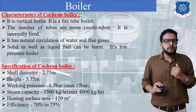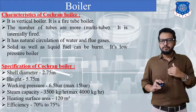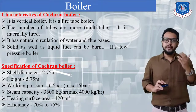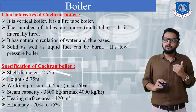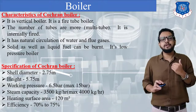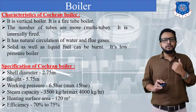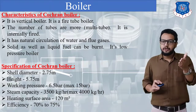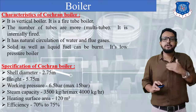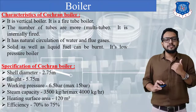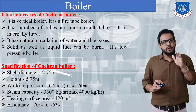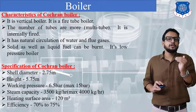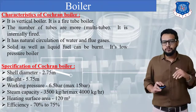Specification of this boiler: shell diameter is 2.75 metres, height is 5.75 metres, working pressure is 6.5 bar, maximum pressure is 15 bar, steam generation capacity is 3500 kg to maximum 4000 kg per hour. Heating surface area is 120 square metres — if you need to write it you can, otherwise just mention the above four specifications as they are sufficient.